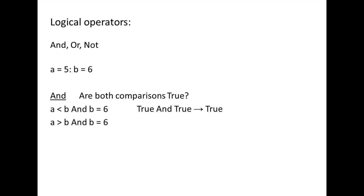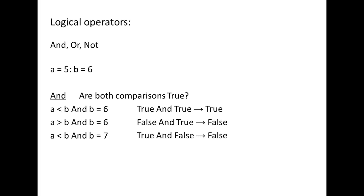Are both a greater than b AND b equals 6 true? 5 greater than 6 and 6 equals 6 — false and true. Since one of the comparisons is false, the entire expression is false. Next, a less than b AND b equals 7: 5 less than 6 and 6 equals 7 — true and false. Since one of the comparisons is false, the entire expression is false. Finally, a greater than b AND b equals 7: 5 greater than 6 and 6 equals 7 — false and false. Since at least one of the comparisons is false, the entire expression is false.